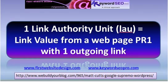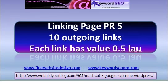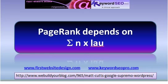I would like to propose that we use Link Authority Unit as the measure of link value. One Link Authority Unit, or LAU, would be the value from a web page with PageRank 1 when there is only one outgoing link. For example, a linking page has a PageRank of 5 and there are 10 outgoing links — each link would therefore have a value of 0.5 LAUs. It follows that PageRank will depend on the sum of all the value in each link coming into that web page in Link Authority Units.